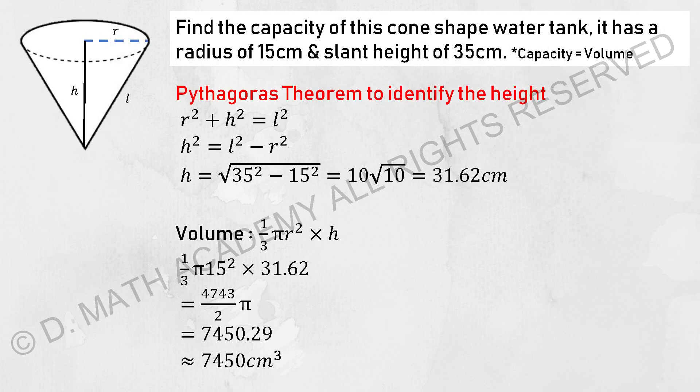Moving on to the first example here. Find the capacity of this cone-shaped water tank. It has a radius of 15 cm and a slant height of 35.